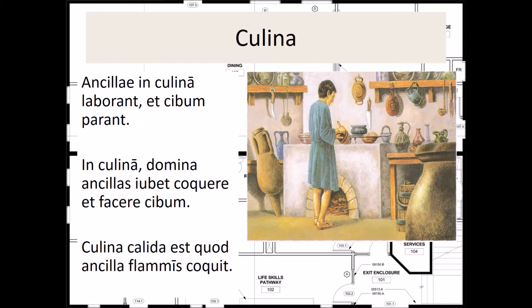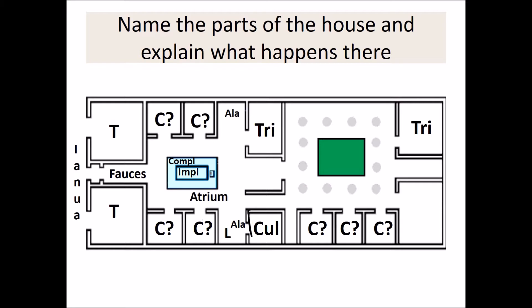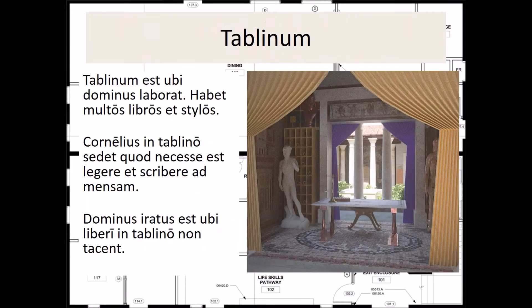The next room in our house is the culina. Ancilla in culina laborant et cibum parent. In culina domina ancila iubet coquere et facere cibum. Culina calida est quod ancilla flammis coquit. To skip, you'll see the location of the culina here in the corner. Typically the culina is located off to one side because since all of the cooking needed to be done with a fire, the culina was typically a very hot place to be, so you wanted it located off to the side and typically further away from the bedrooms or the sleeping areas. And of course, this is the location in a domus or in a villa where the mistress of the house would order the slaves to prepare the food.